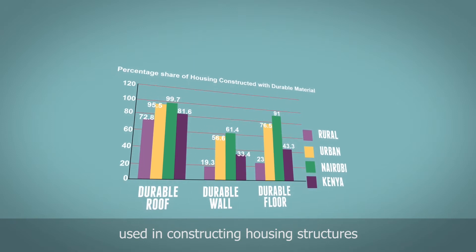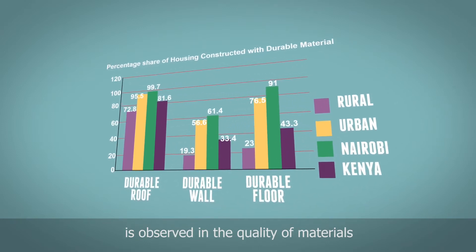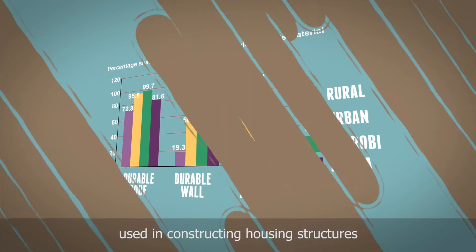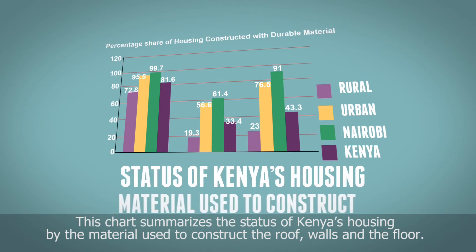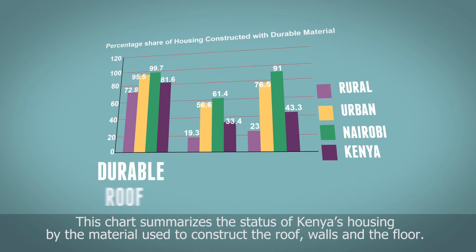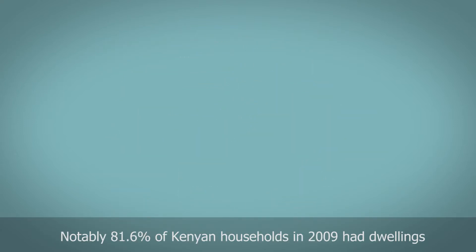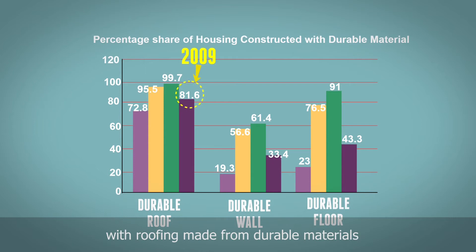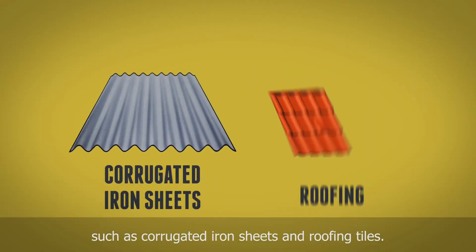The difference in earnings between urban and rural households is observed in the quality of materials used in constructing housing structures. This chart summarizes the status of Kenya's housing by the materials used to construct the roof, walls and the floor. Notably, 81.6% of Kenyan households in the year 2009 had dwellings with roofing made from durable materials such as corrugated iron sheets and roofing tiles.